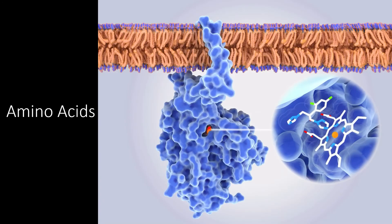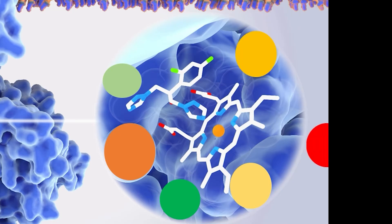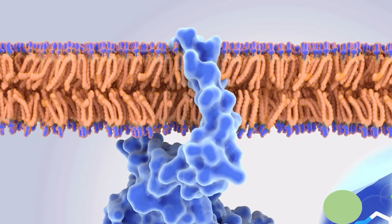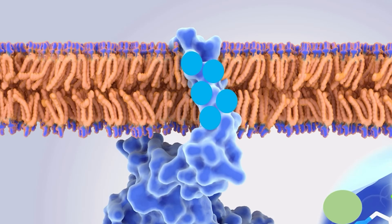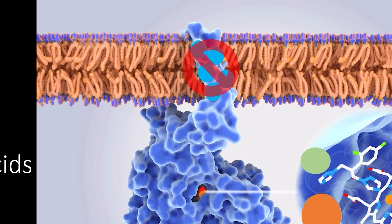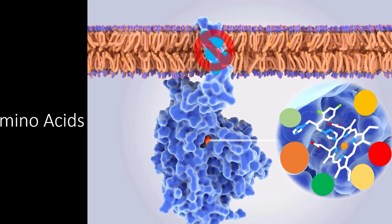To see why R groups are so important, let's look at the structure of an actual protein. First, look at the active site — this is where the protein carries out its function. The amino acids within the active site must have the right physical and chemical properties to hold onto a substrate and catalyze a reaction. Likewise, this protein must have hydrophobic regions where it binds to the cell membrane — if hydrophilic amino acids were used instead, the protein could not stick in the membrane. The protein must have the right sequence of amino acids to fold into the proper shape and function correctly.